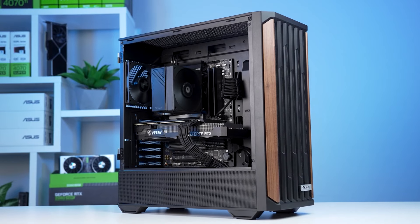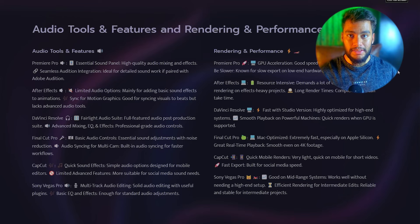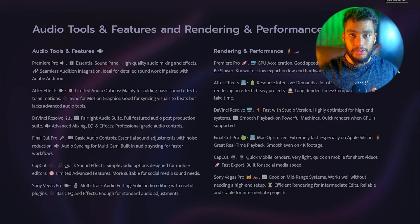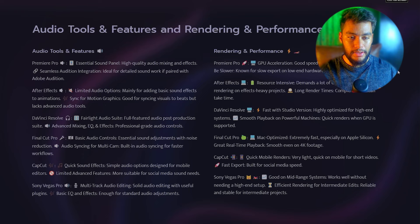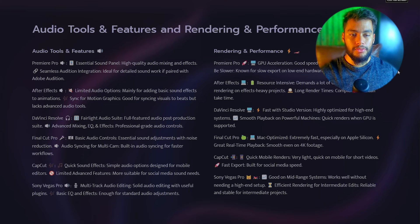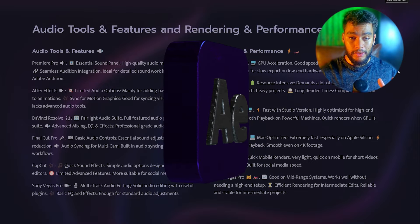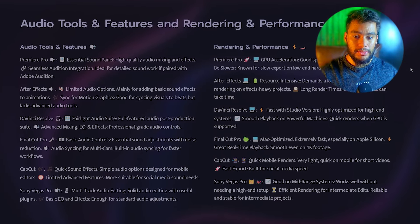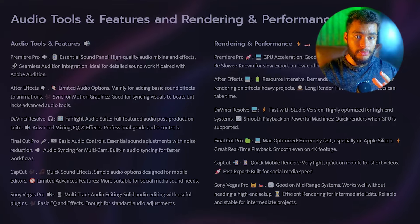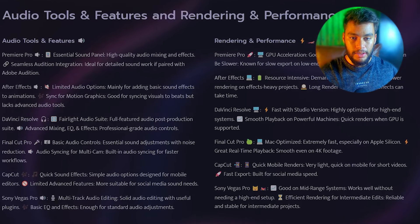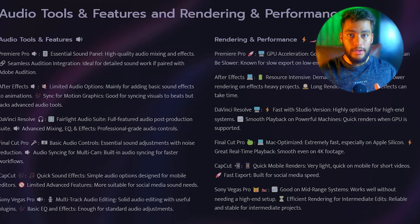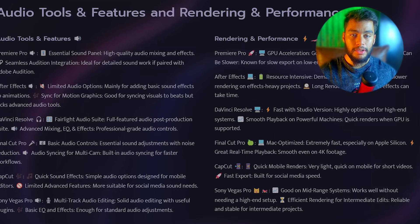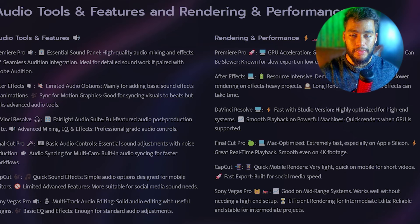Premiere Pro is highly dependent on your hardware. If you don't have a good PC, you will definitely experience lags and crashes and you won't have a good time editing. I don't recommend this software if you don't have at least a mid-range PC — around $800. After Effects, being the most powerful software on this list, is also the slowest. It has long render times because of all the advanced motion graphics you'll be doing. The Adobe softwares do demand good hardware for them to run properly. In terms of efficiency and workflow smoothness, After Effects is the worst.